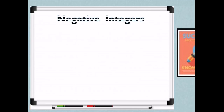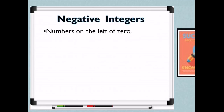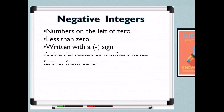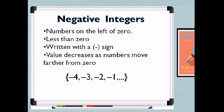How about negative integers? These are numbers on the left of 0, and these are numbers less than 0. Written with a negative sign. Value decreases as numbers move farther from 0. Example: negative 4, negative 3, negative 2, negative 1. So those are negative integers.